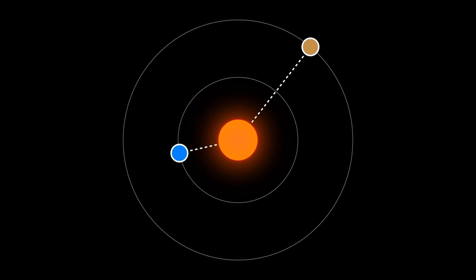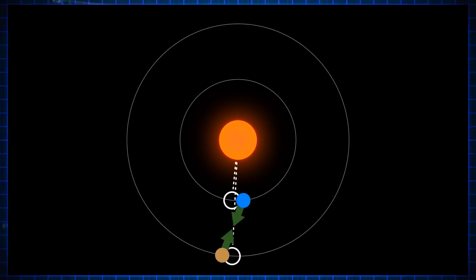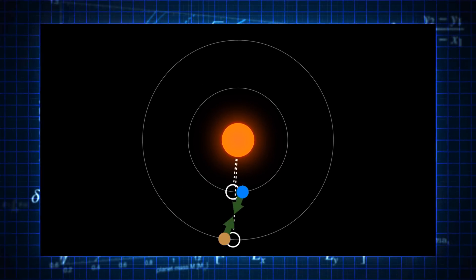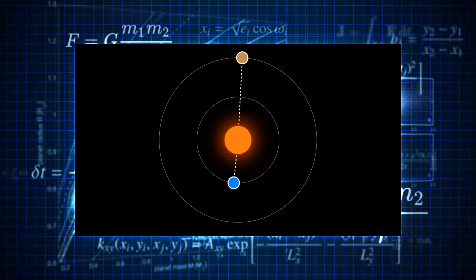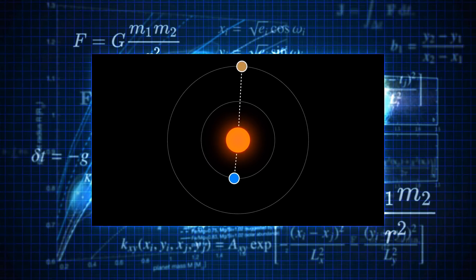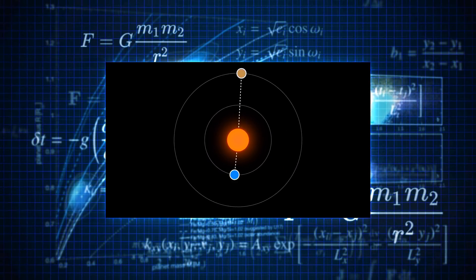If we observe the timing variations of the planets over many orbits, astronomers can, using a lot of math, calculate just how much mass each planet must have to create these schedule glitches.